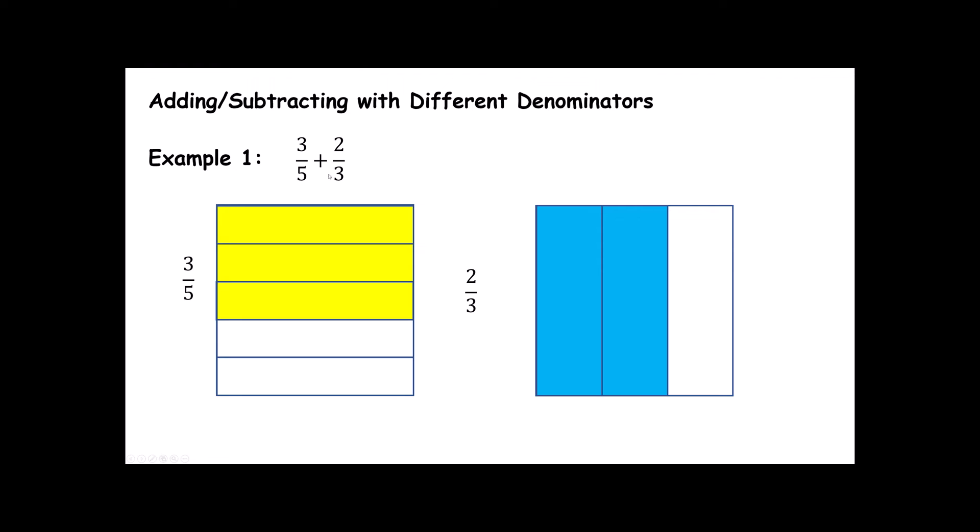When we had like denominators, and all our pieces were the same, all we had to do was say, well, I have 3 pieces and 2 pieces, that's 5 pieces. But I can't do that if the pieces are different sizes. I need to change these pieces so that the pieces are the same size. And I've got a really quick and cool, easy way to do that.